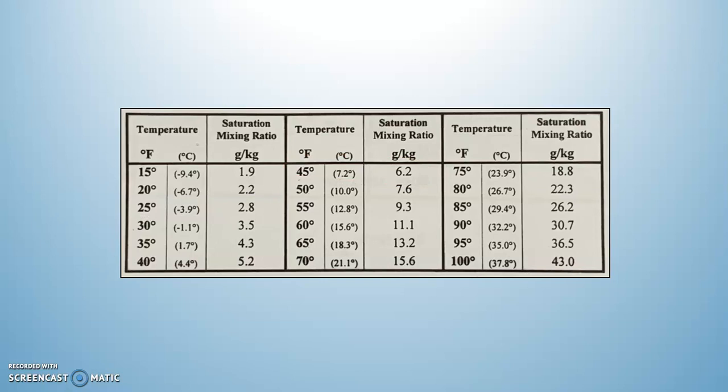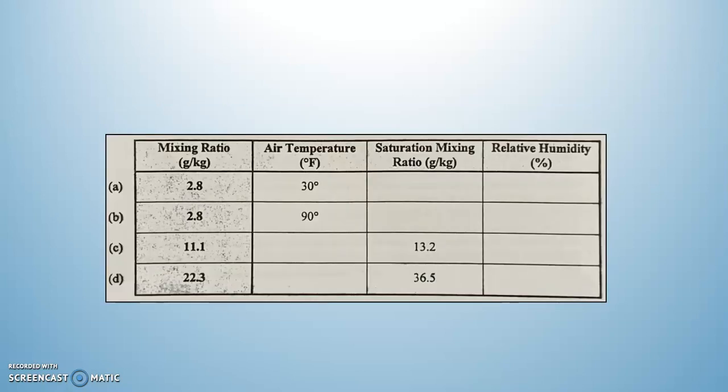Let's say we knew the dew point temperature was 35 degrees and the air temperature was 40 degrees. What is the SMR and the MR? The mixing ratio would be 4.3 and the saturation mixing ratio would be 5.2. You take 4.3 divided by 5.2 — that gives you relative humidity.